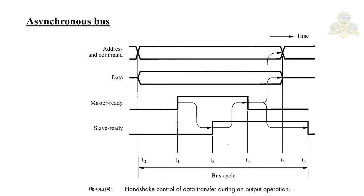The output operation is similar to the input operation, with one key difference: at time t0, when the master places the address and command, it also places the data on the bus simultaneously. At t1, master ready is activated. The slave identifies its address and strobes the data into its output buffer. The rest of the process remains the same as for the input operation.